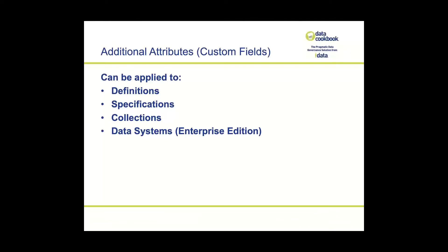The first feature is additional attributes, which are really custom fields. They can be applied to the types of data cookbook objects that you see on the screen. Administrators in the cookbook create them, and then they're available to populate when a user is in edit mode.